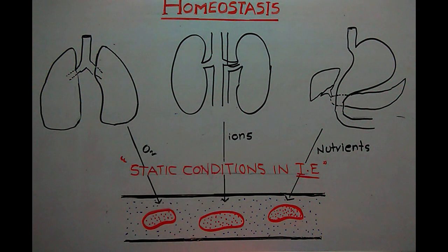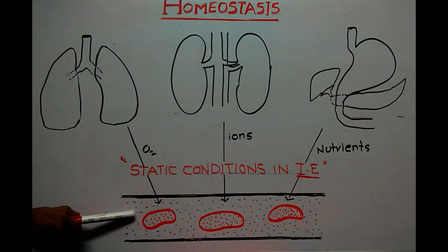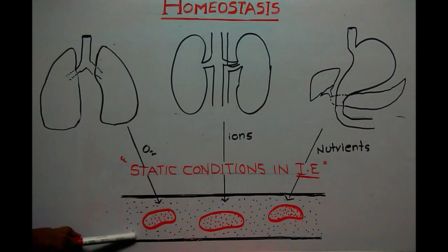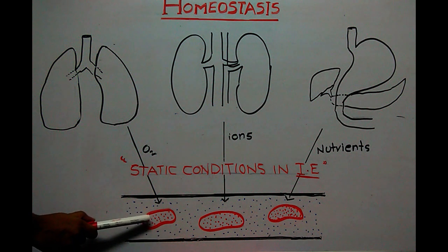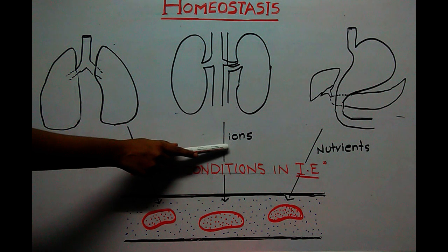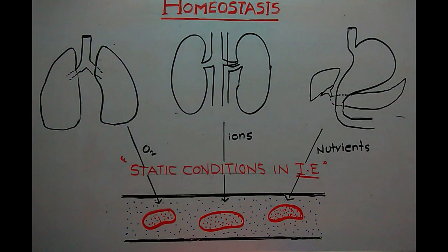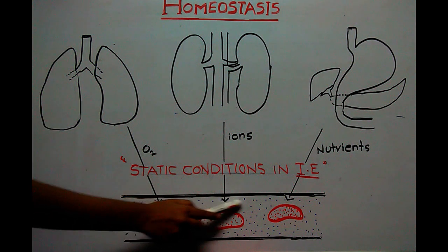Now it's easier to understand the term homeostasis — it means the maintenance of a static condition in the internal environment. All the organs and tissues of the body perform functions that help maintain these static conditions. For instance, the lungs provide oxygen to the extracellular fluid so it can continuously supply it to the cells whenever needed, and the kidneys maintain ion concentration, while the gut provides nutrients.